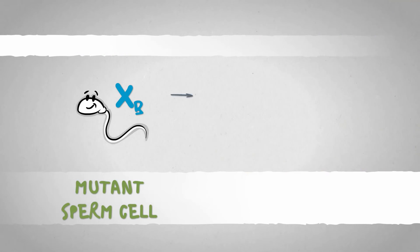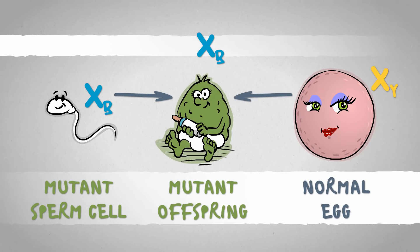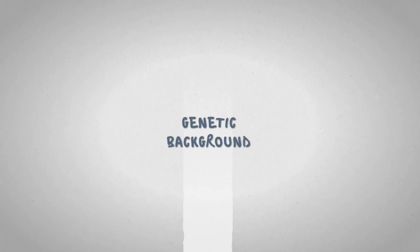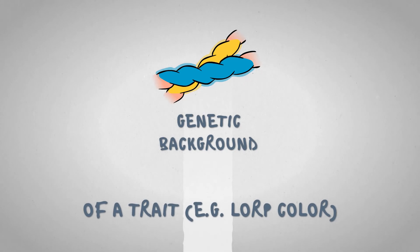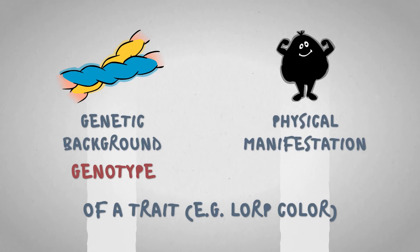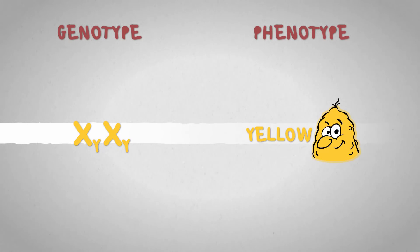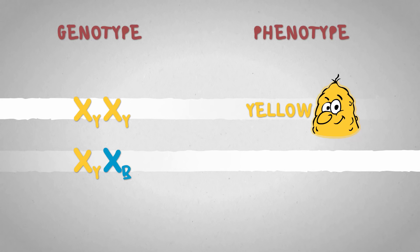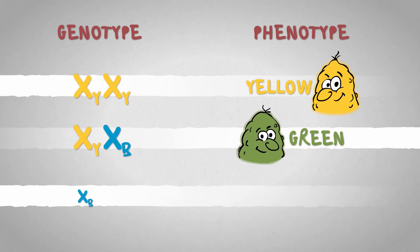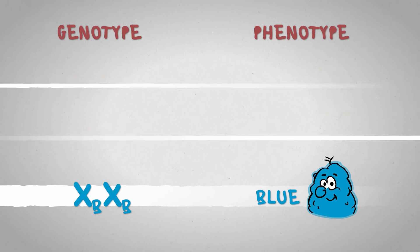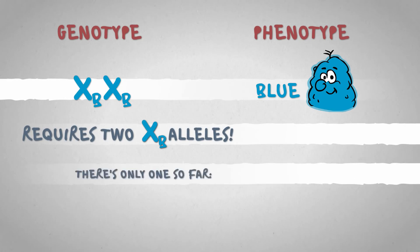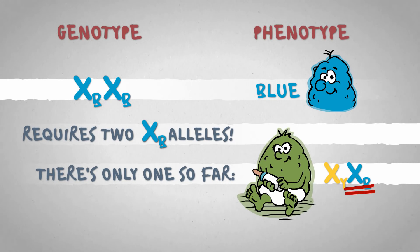The very allele that ended up in Booger LORP paired up with his mom's yellow allele. The genetic background of a given trait such as LORP color is called genotype, while its physical manifestation is referred to as phenotype. X-Y/X-Y genotype produces a yellow phenotype, while X-Y/X-B makes a green one. The X-B/X-B genotype would result in a blue LORP, but this is just a theoretical possibility considering Booger LORP is the only one with an X-B allele.